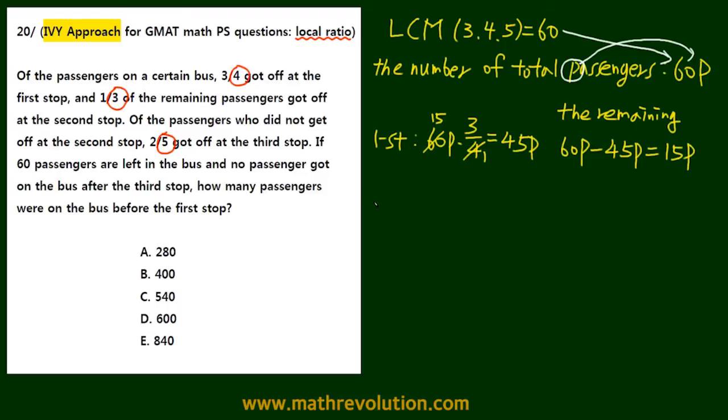On the second stop, one-third of the remaining passengers got off. The remaining was 15p, and one-third of that - if we divide by 3 - is 5p. The remaining passengers will be 15p minus 5p, which is 10p.